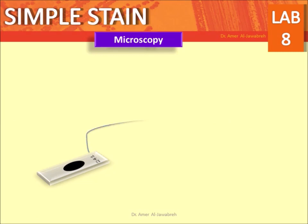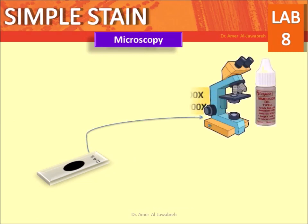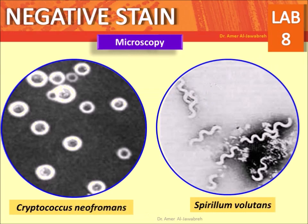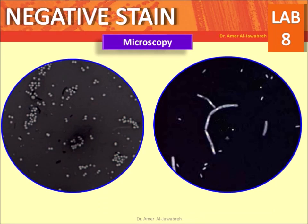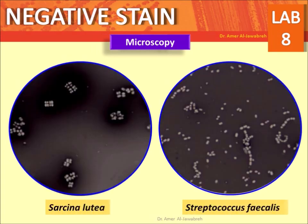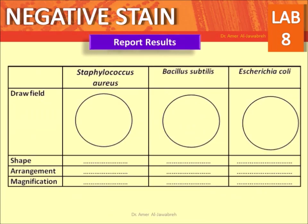Microscopy: examine under 400× and confirm under 1000×. Examine for shape and arrangement of bacteria. Organisms to examine include Cryptococcus neoformans, spiral involutes, Staphylococcus aureus, and Bacillus species. Use the provided report form to record and report results.